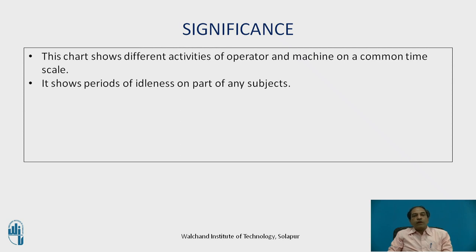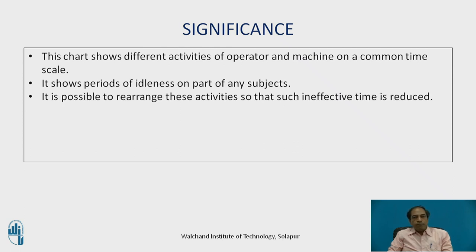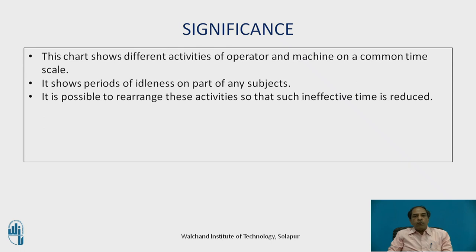The significance and importance of the multiple activity chart is that it shows different activities of the operator and machine on a common time scale. It shows periods of idleness of the machine or the man, making it possible to rearrange activities to reduce ineffective time. The whole purpose is to find the utilization and occupancy of the operator and machine, identify idle time, and maximize utilization of either resource — operator, machine, or both simultaneously.